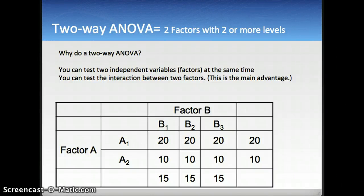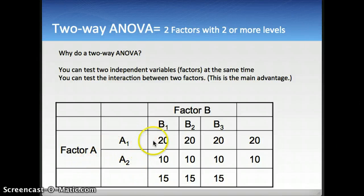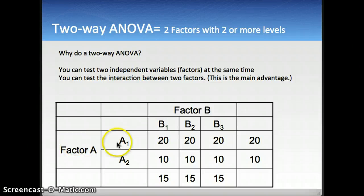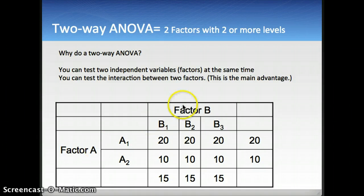The two-way ANOVA is an extension of the one-way ANOVA to two factors. For example, you have a factor A with two levels — it could be boys and girls — and then you have a factor B, for example socioeconomic status with three levels: one, two, three. Then you have two factors, two main effects, factor A and factor B, and you have the interaction between factor A and factor B.